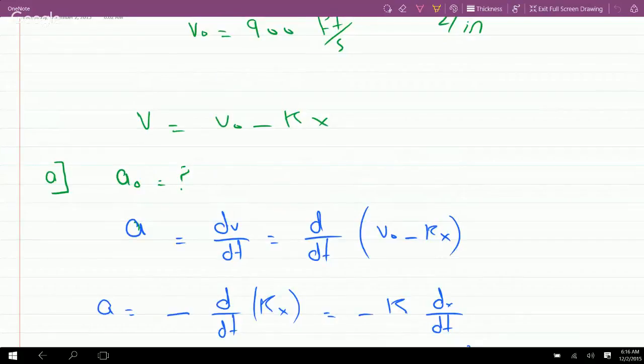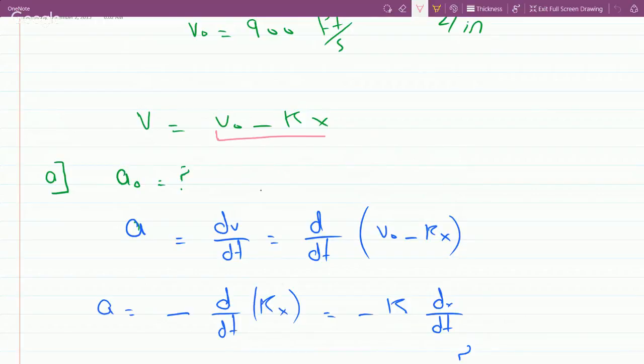I take d over dt of the velocity function. This is my velocity function that I have down here, so I took the derivative of this.